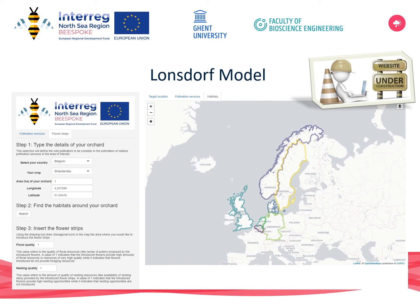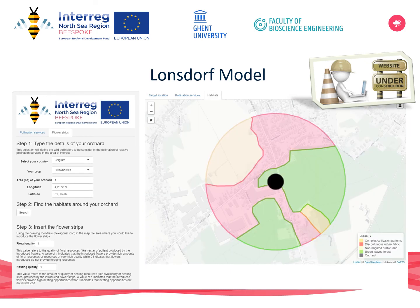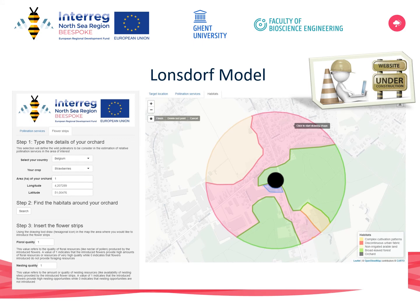An individual can also do predictions. For this, a final tool based on the Lonsdorf model will be implemented. Here, one can select the crop and the area of interest. The land covers will then be shown, and the user has the ability to add an area which will be changed into a flower strip. The web application will provide an estimate of pollinator increase for those pollinators suited to pollinate the crop of interest. Thus, it can be evaluated where and how big a flower strip must be to support extra pollinators and their valuable service, which is pollination.